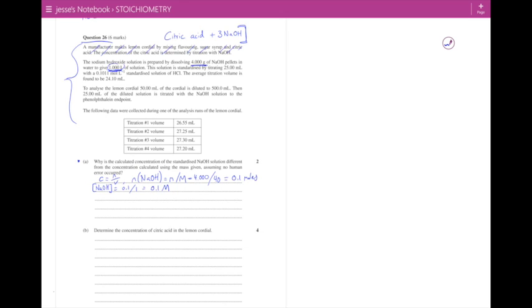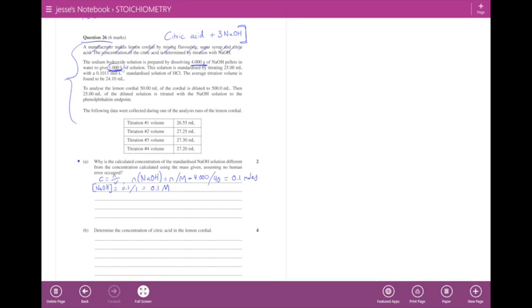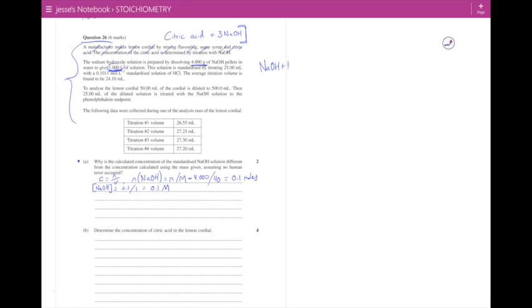Calculated concentration, how am I going to find that? Well it says this solution is standardized by titrating 25 mL with a 0.1011 mol per liter standardized solution of HCl. The average titration volume is found to be 24.1 mL. What we actually need here is a reaction which isn't given to us. However this is a reaction you're going to need to understand and know: NaOH plus HCl goes to H2O plus NaCl. This is a reasonably standard acid plus base reaction. The important bit here was that it's a one-to-one relationship between my NaOH and my HCl.